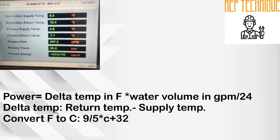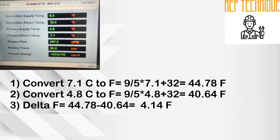So we will apply this formula to calculate our load. We convert 7.1 degree Celsius to Fahrenheit and the value is 44.78 degree Fahrenheit. Similarly, 4.8 degree Celsius converts to 40.64 degree Fahrenheit. And the delta temperature is 4.14 degree Fahrenheit.